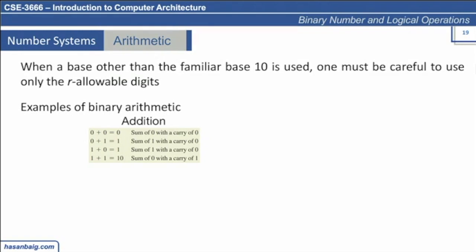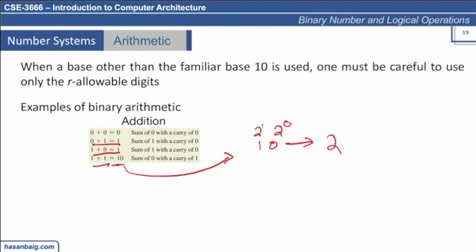For binary addition: zero plus zero is simply zero; zero plus one is one; one plus zero is one. One plus one is two, but two cannot be represented in binary, so we represent it with two digits: one and zero. When you convert '10' in binary to decimal, you get two to the power of zero plus two to the power of one, which is exactly two. So when adding one and one in binary, the output will always be '10'.